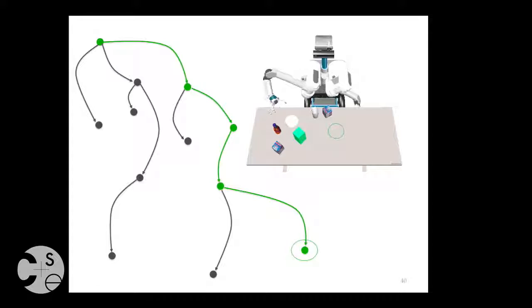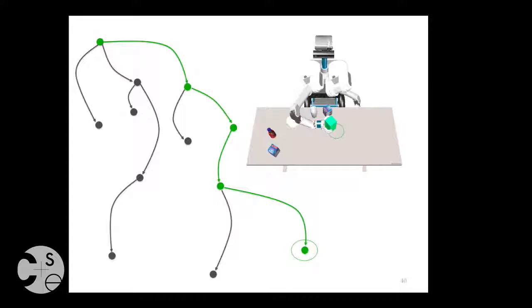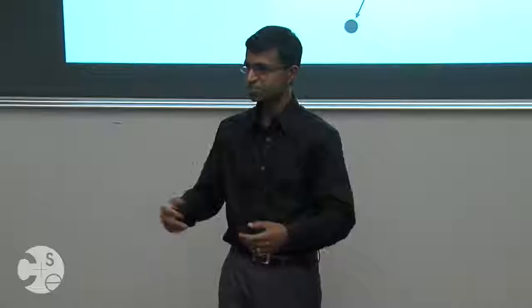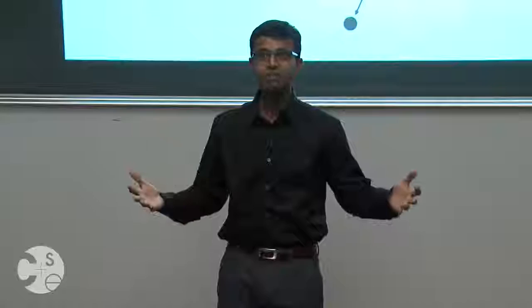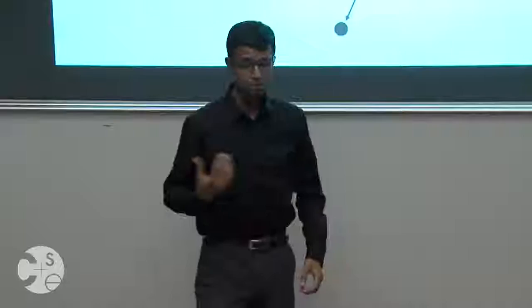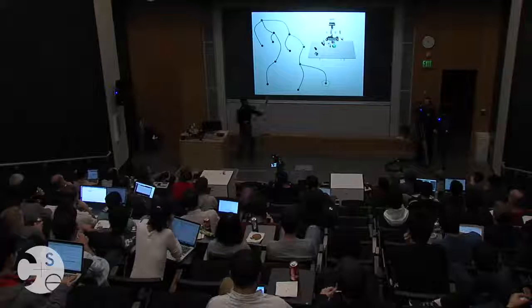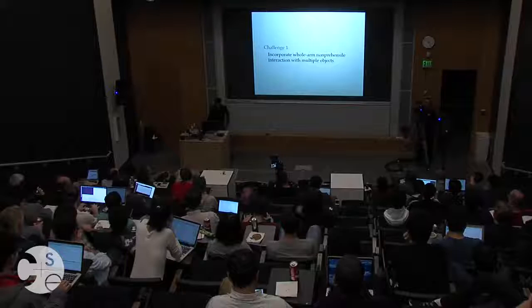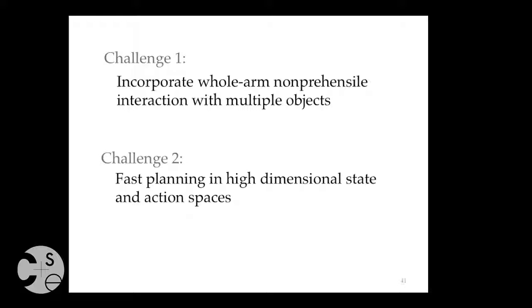We use trajectory optimization algorithms to guide the search: each rollout tells you how far it got to the target, and that gradient guides the next rollout. When you reach your target region, you walk the tree back to the start and get a plan. We use anytime algorithms that trade off optimality for speed — if you ask for an answer in two seconds, you get a somewhat suboptimal answer; in five seconds, a much better answer. The system constantly branch-and-bounds its solutions, giving a quick suboptimal answer that improves over time.